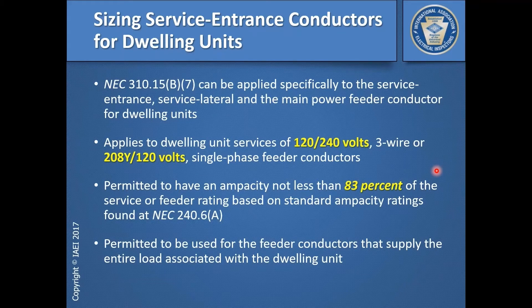But if you do this 83% load calculation, it tells you that same 2 AWG copper conductor is good for 200 amperes. So you'd be able to use 2 AWG copper at a dwelling unit using the requirements of 310.15(B)(7).